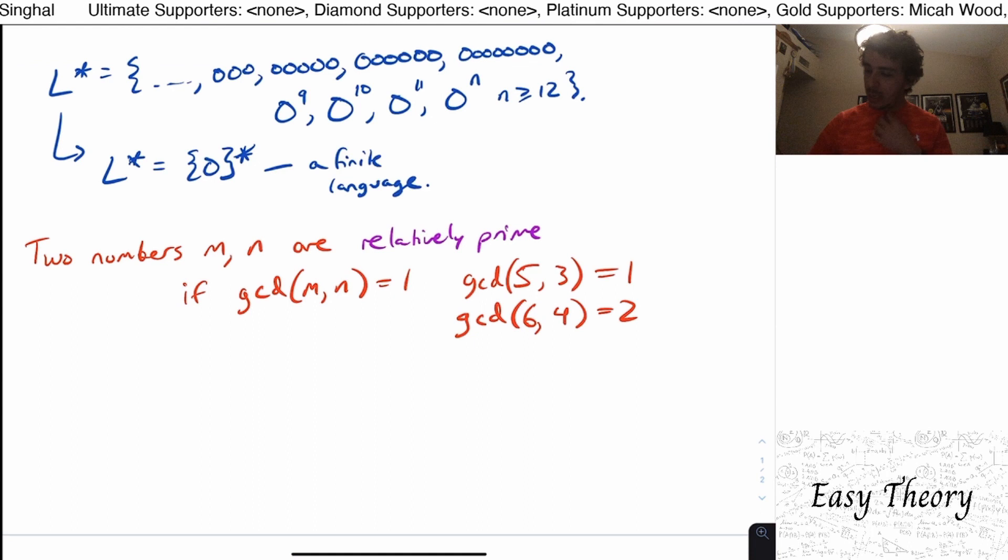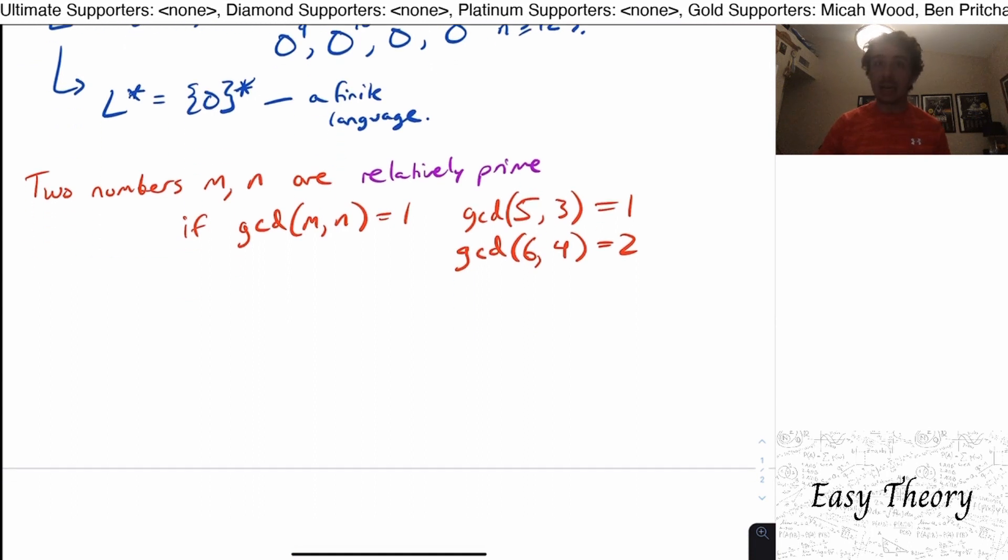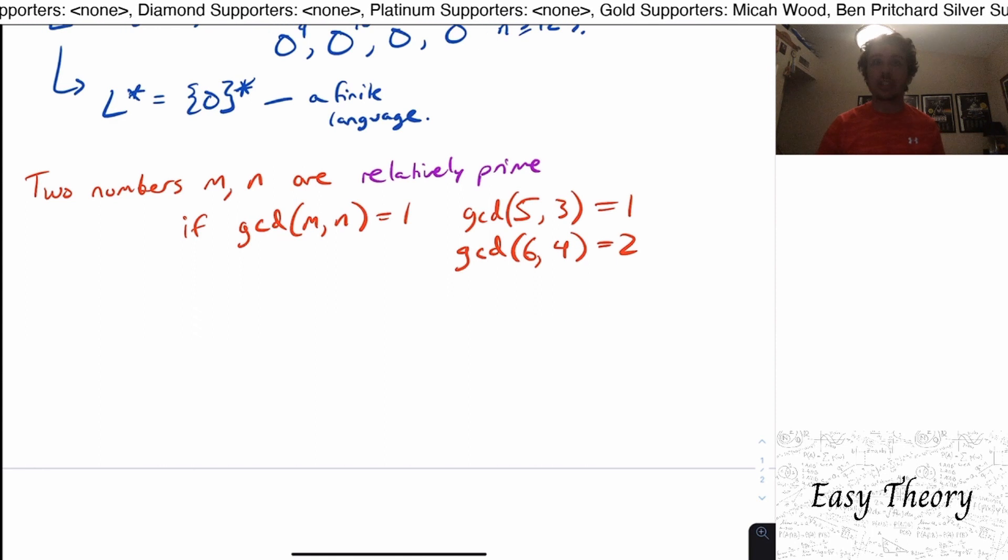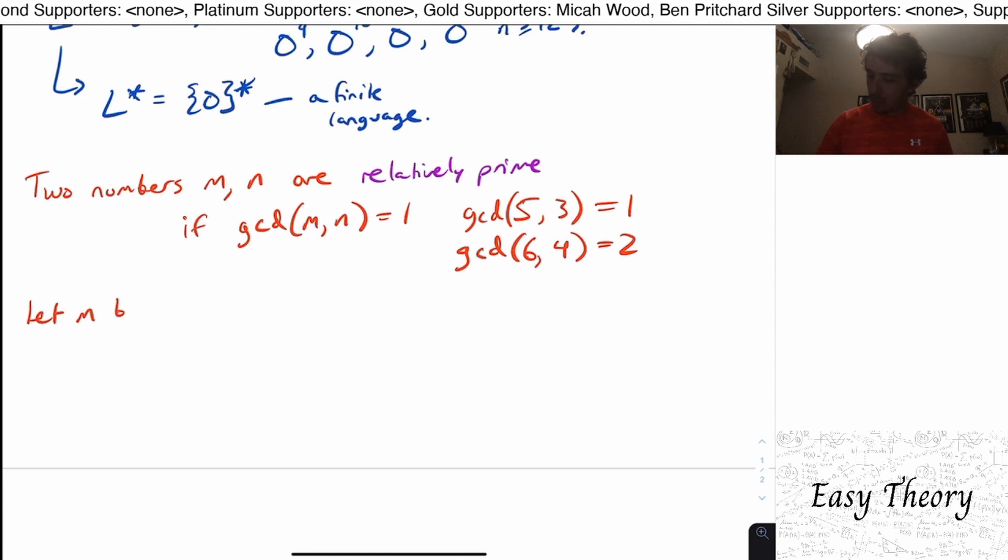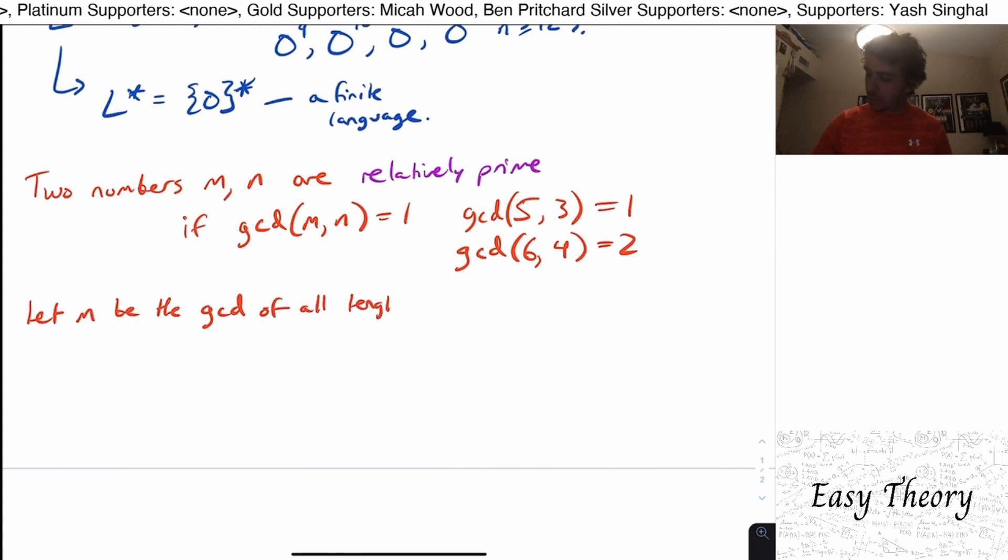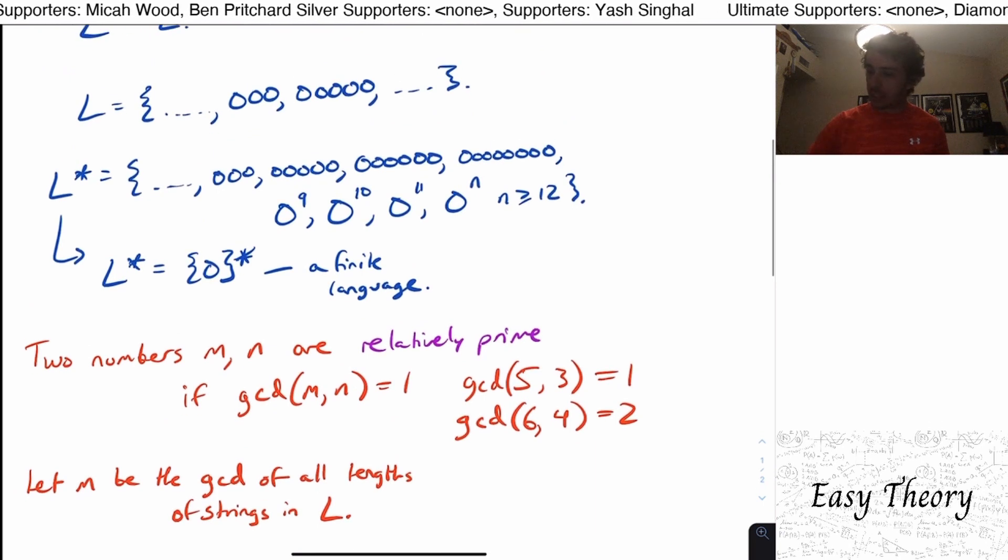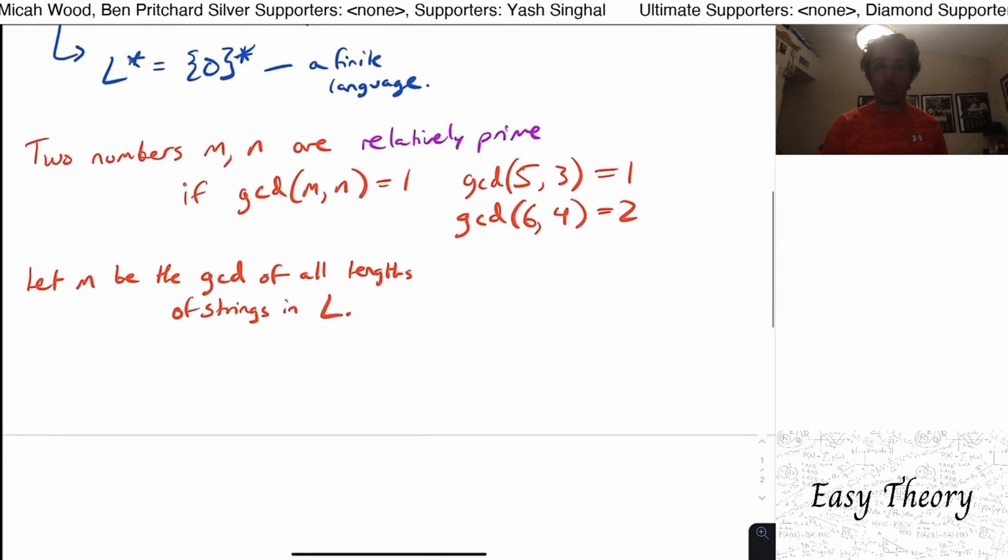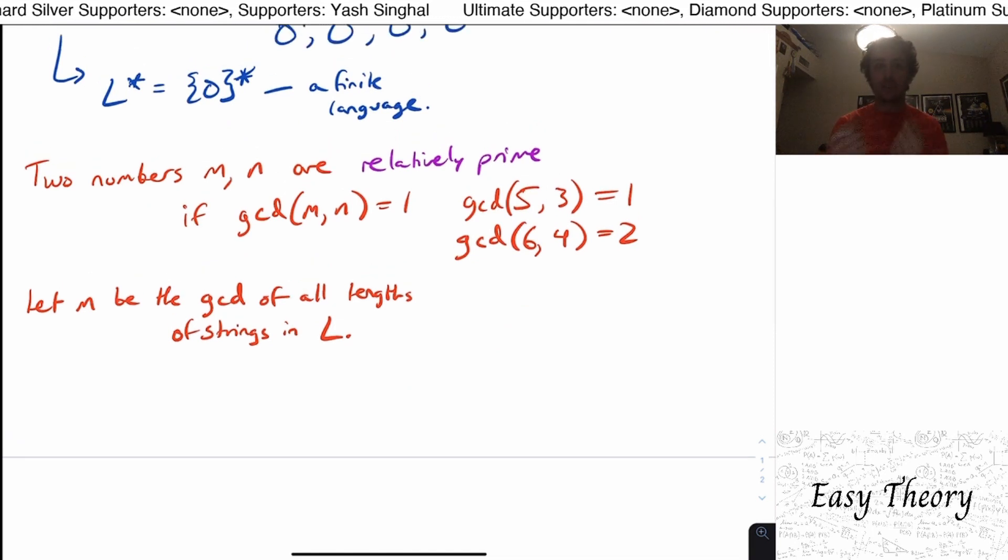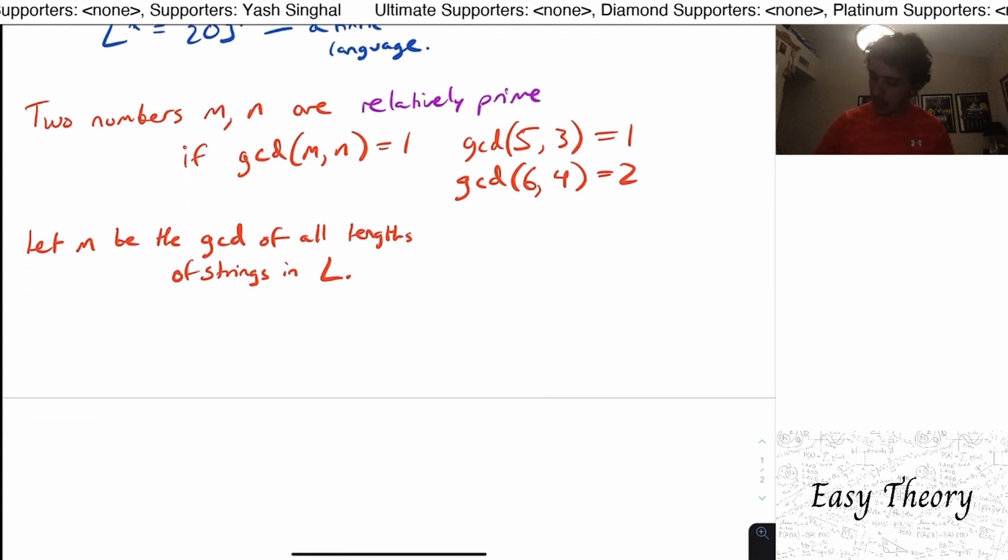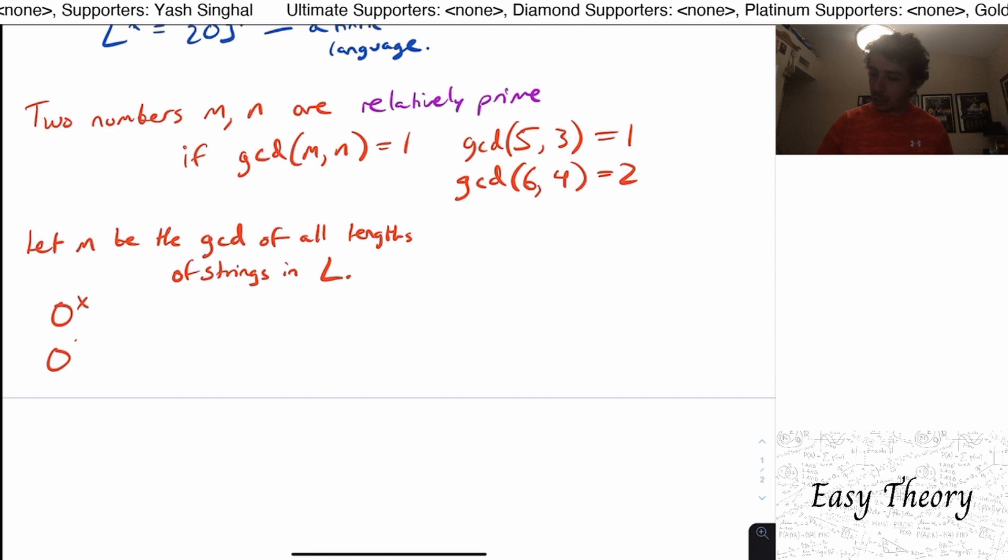So what we can do is we can extend the GCD for the lengths of every single string in the entire language. So let M be the GCD of all lengths of strings in the original language L, whatever that may be.